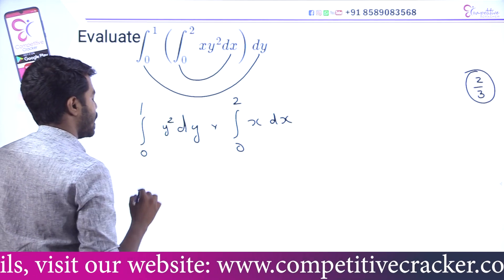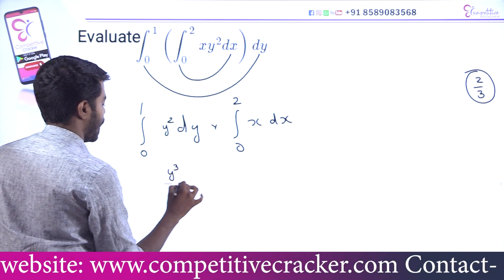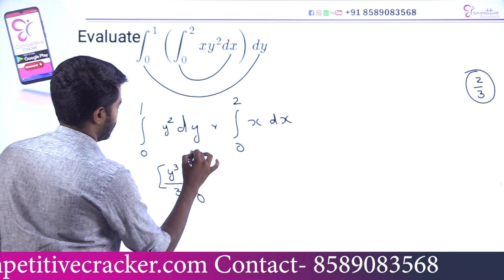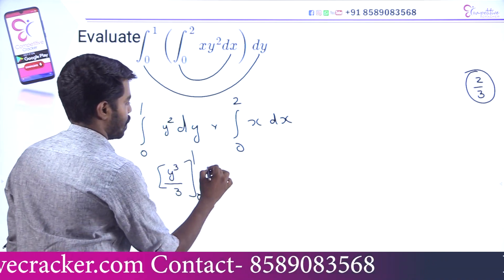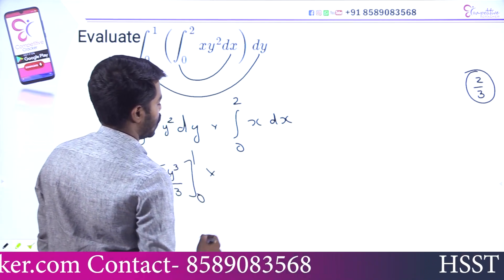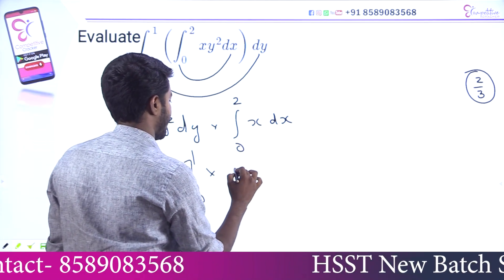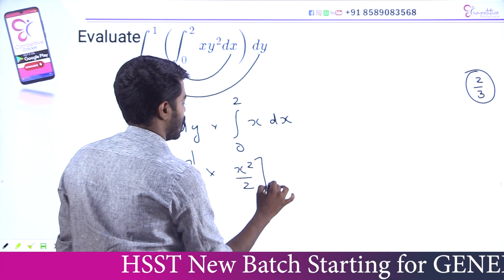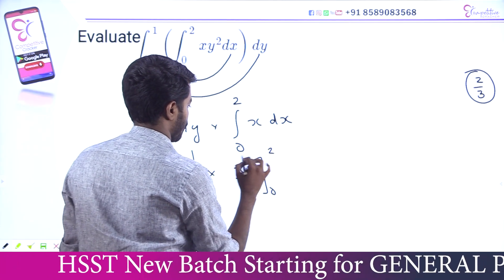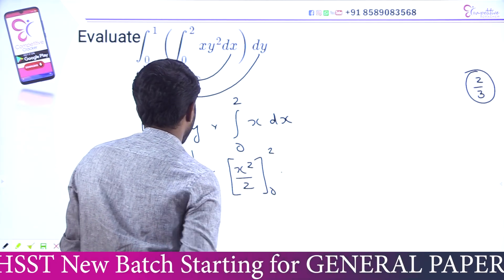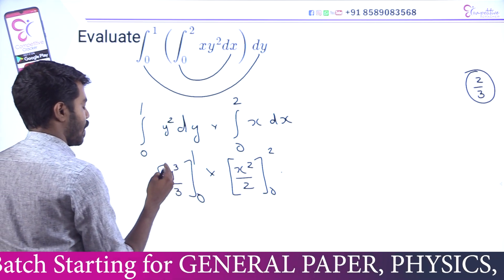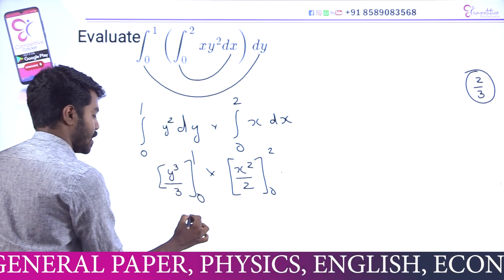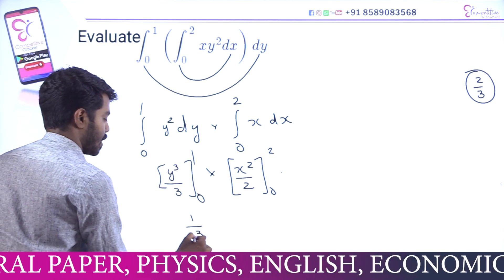Integrating y² gives y³ by 3. We apply the limits — upper limit and lower limit. Integrating x gives x² by 2, limit 0 to 2. Then: y³ by 3 evaluated at upper limit 1 gives 1³ by 3 = 1 by 3, lower limit zero gives zero.